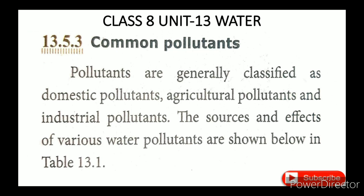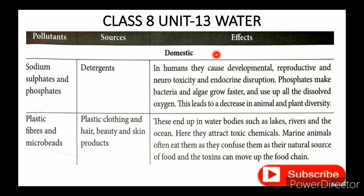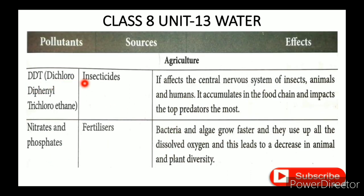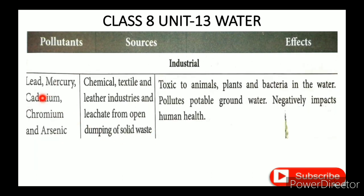In summary: domestic pollutants include sodium sulfate, sodium phosphate, and microplastics and microbeads. Agricultural pollutants include DDT (dichloro-diphenyl-trichloroethane), nitrates, and phosphates. Industrial pollutants include lead, mercury, cadmium, chromium, and arsenic. In the next video, we will learn how to control water pollutants.